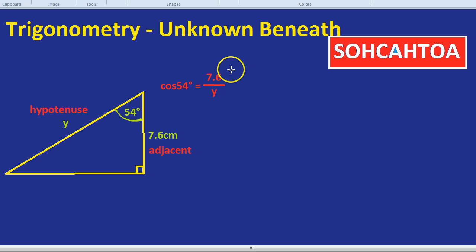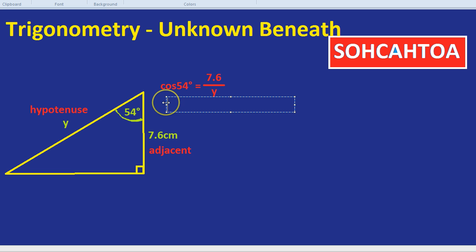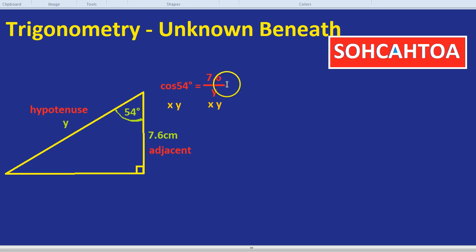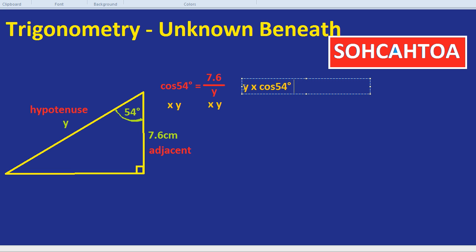Well this is where the video comes in because you notice the unknown is beneath. The unknown Y that we're looking for is in the denominator of the fraction. Now there's a short way and a long way of solving this and I want to very quickly show you the longer way just so you understand how to do the shorter way later on and you don't feel like it's just a cheat. So I want to show you how it works and then we can do the shortcut later on. How it works is this. How do we get rid of that Y on the bottom line? That divide by Y. To get rid of divide by Y you times by Y to both sides. So times by Y and times by Y. On the left hand side we would get Y times by cos 54. On the right hand side the divide by Y and the times by Y cancel out so you're just left with 7.6.